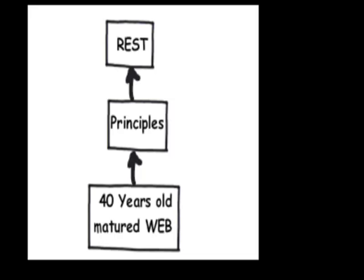Now some of the amazing features of the web are: first, the 40-year-old matured and widely accepted HTTP protocol - that's the first thing which REST actually takes from the web. Second, this HTTP protocol has standard unified methods like POST, GET, PUT and DELETE. Third, HTTP protocol is stateless. Fourth, the URI - that is the Uniform Resource Identifier - by which you can go and locate any resource on the web. What REST does is it takes these four things from the 40-year-old web and applies certain principles on them, and that's what is called REST.